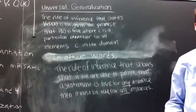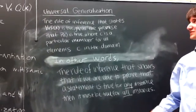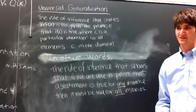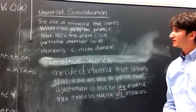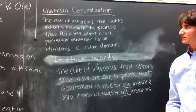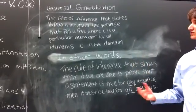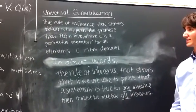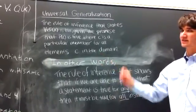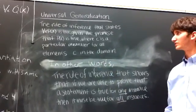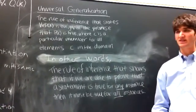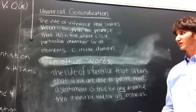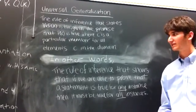Hello, today I will be describing the principle of universal generalization as it applies to discrete mathematical truths. Universal generalization is a rule of inference that states that for all x, p of x is true, given the premise that p of c is true, where c is a particular member for all elements c in the domain.